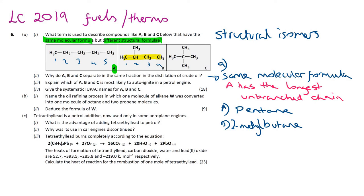For C, the longest unbranched chain is 3 carbons, so that is going to be a propane stem. It has 2 methyl groups coming off carbon number 2, so we call it 2,2-dimethylpropane. 'Dimethylpropane' would suffice, because both of those methyls have to come off carbon number 2 — if they came off carbon 1 or carbon 3, that would just extend the longest unbranched chain, and we wouldn't be using a propane stem.